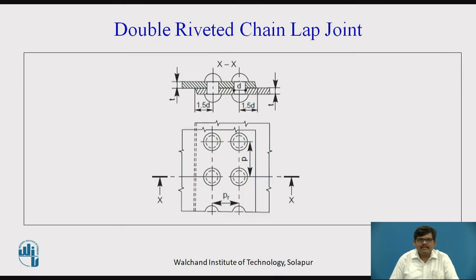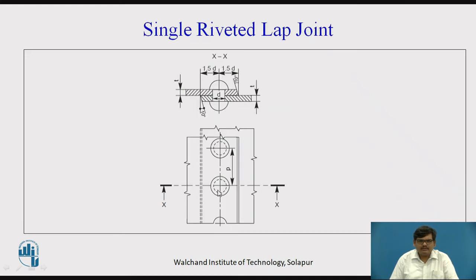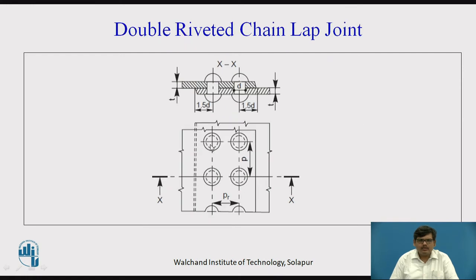Next is double riveted chain lap joint. Same lap joint — the plates are placed one over the other. This is the front view and this is the top view of the two plates. In the previous one there was only one line of rivets, but now we have two rivets placed side by side. The distance between the two centerlines passing through the rivets is called the pitch. So this is double riveted because two rivet lines are there, chain because they are one after the other, and lap joint because the plates are placed one above the other.